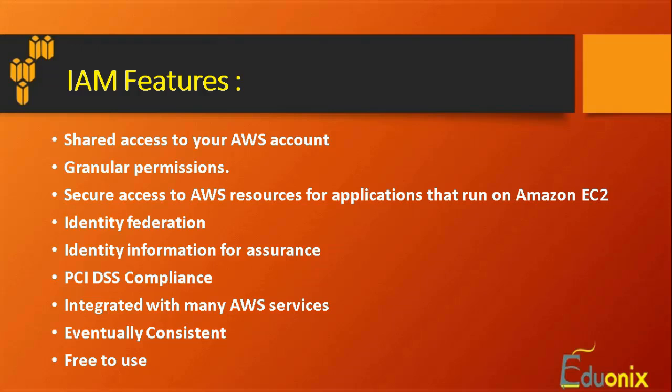Granular permissions allow customized access - for example, one user can start a virtual machine and read all stored content but cannot store anything permanently or shut it down. You can secure access to AWS resources for applications running on Amazon EC2. IAM also supports identity federation, where users authenticated through other parameters - such as a corporate account - can be identified and given access to your resources.